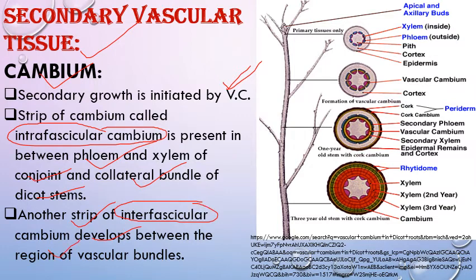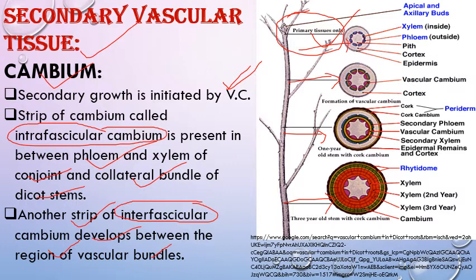This picture shows primary growth. In older parts, secondary growth begins, while the apical portion shows growth in length (primary tissues only). In older parts we can see periderm and secondary vascular tissue — secondary phloem and secondary xylem — formed by vascular cambium.